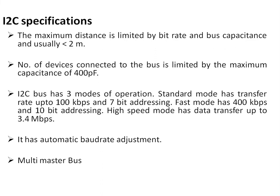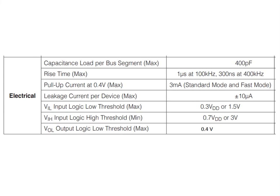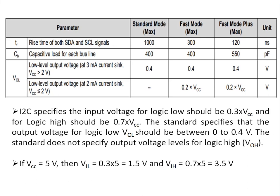The electrical specifications of the I2C bus: capacitance load per bus is 400 pF; rise time is 1 microsecond at 100 kHz for standard mode, and 300 nanoseconds at 400 kHz for fast mode. Pull-up current at 4.4 volts is 3 milliamperes per the standard. VIL, the input logic low threshold, is 0.3 VDD — which is 1.5 volts for 5V VCC. VIH, input logic high threshold, is 0.7 VDD.